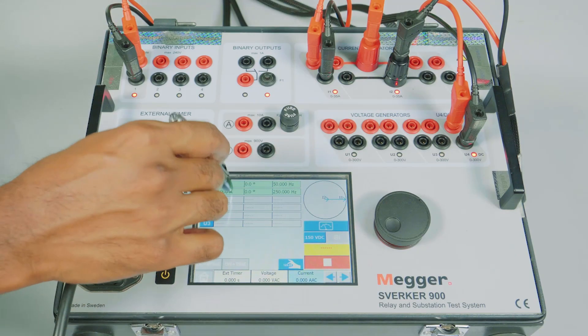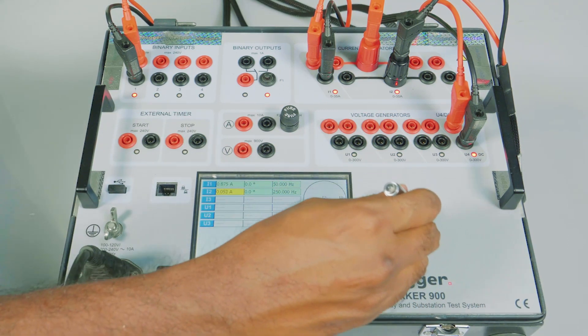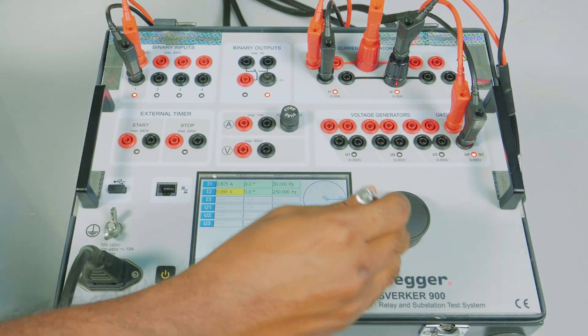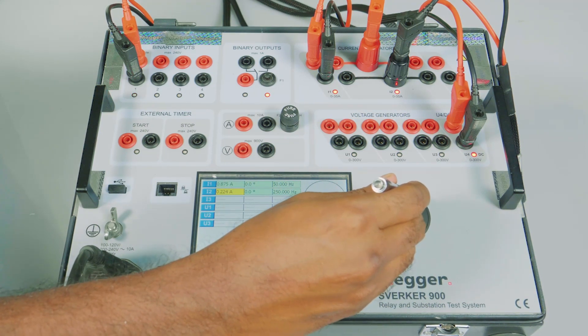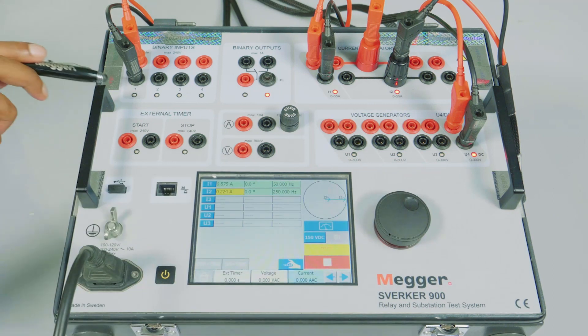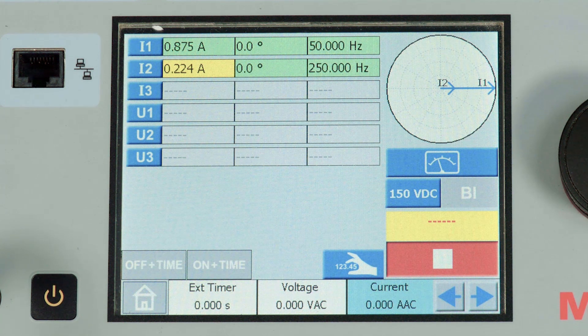Now let us increase the CT2 current gradually and verify the dropout. I have selected CT2 and I am increasing the current. So we can see that the relay has dropped out at 0.224 amps.